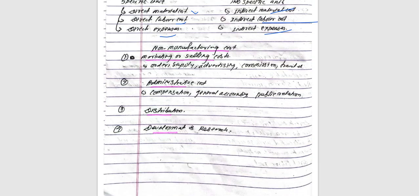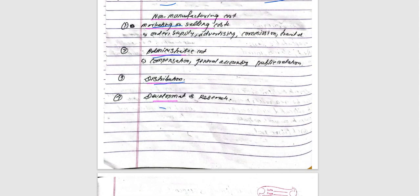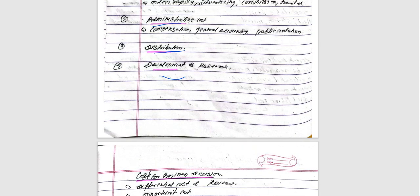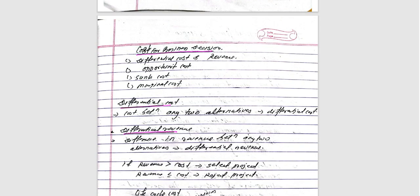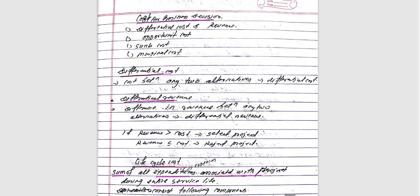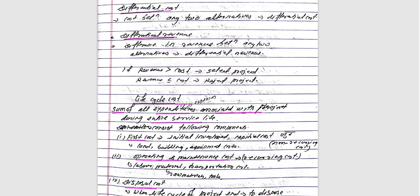Non-manufacturing cost includes marketing and selling cost, administrative cost, distribution cost, developing and research cost, and other business costs. This is an important category to understand.